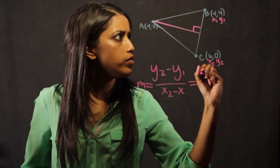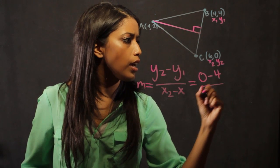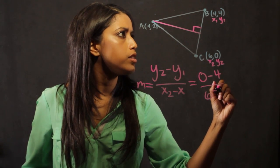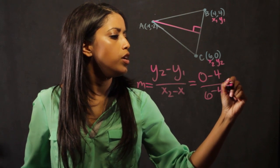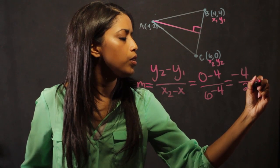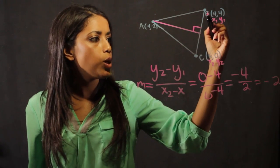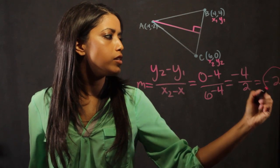So I have 0 minus 4 and 6 minus 4. So I get minus 4 over 2, which is equal to negative 2. So that means the slope of line BC is minus 2.